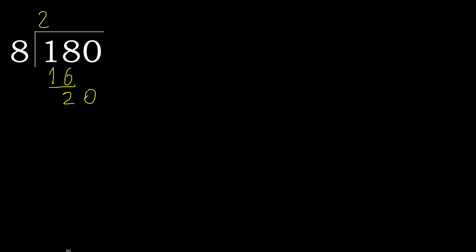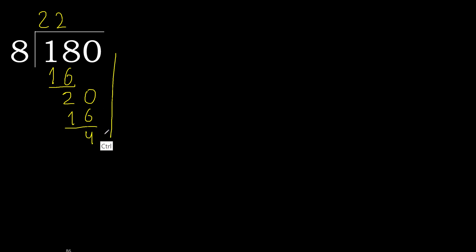Next, bring down 20. 8 multiplied by 3 is greater, so multiply by 2. 16 is not greater. 20 minus 16 is 4.